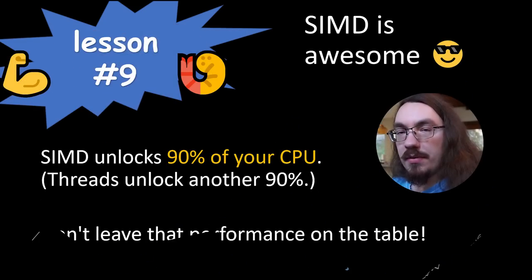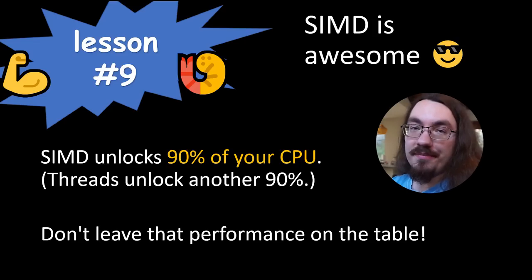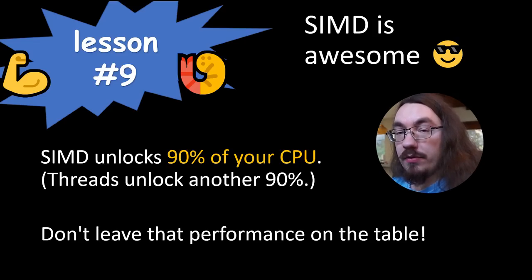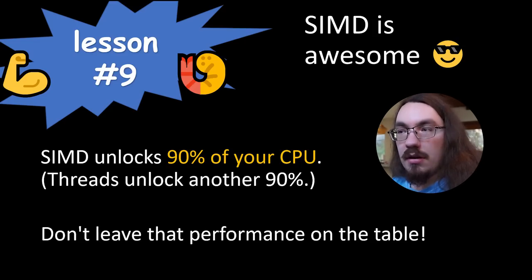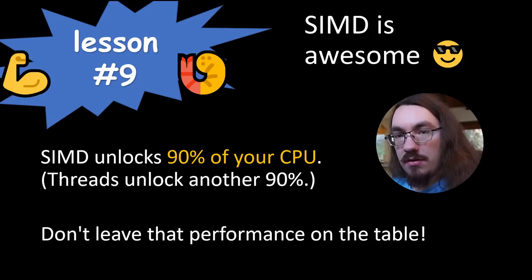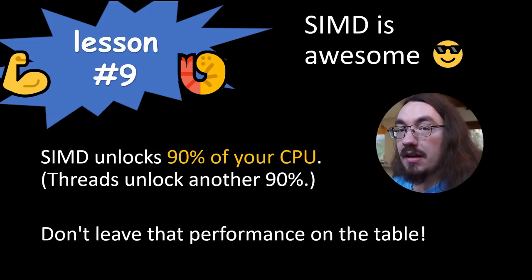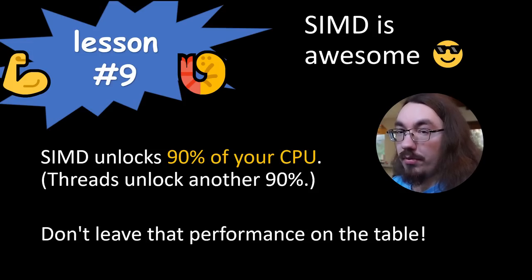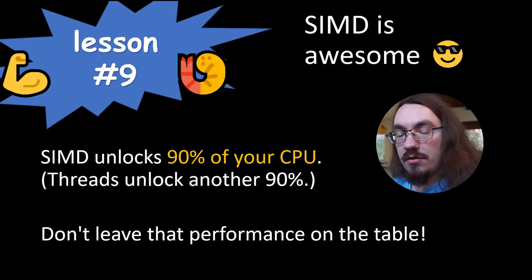Lesson number nine: SIMD is awesome. You can get major performance speedups with SIMD. We all know threads are a large part of your CPU's processing power — on an eight core system, you're wasting over 80% of your CPU if you're only using one thread. SIMD is similar: you're wasting 80% of your CPU if you're only using scalar values. Compilers can sometimes auto-optimize your code to use SIMD, but it's pretty rare, so it's worth checking if you can apply SIMD to your own algorithms.